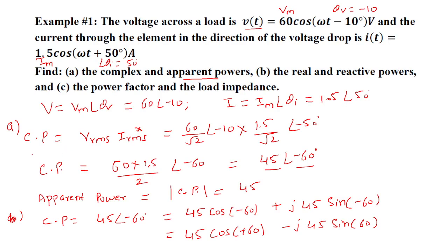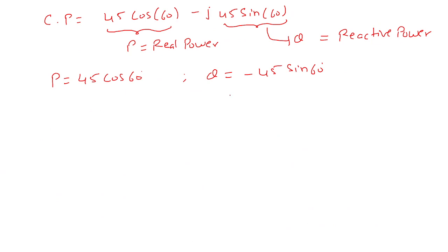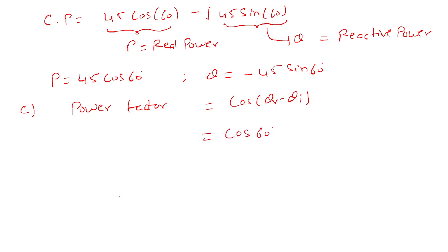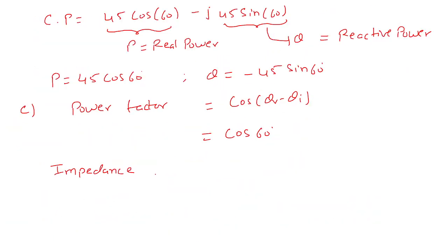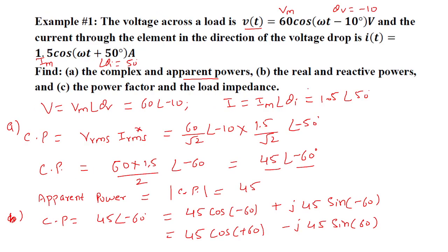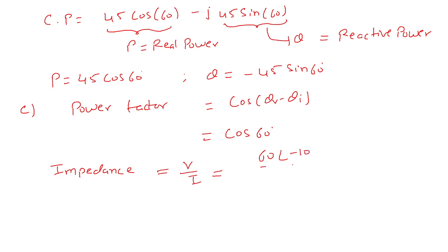The power factor is cos(θv − θi) = cos(−10° − 50°) = cos60°. Finally, the load impedance is V divided by I: Z = (60∠−10°)/(1.5∠50°) = 40∠−60° Ω.